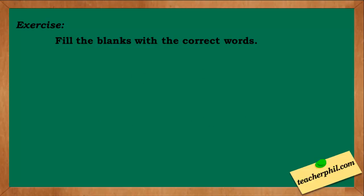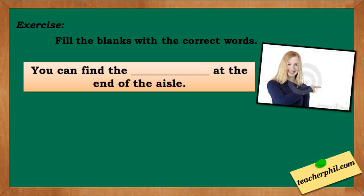For our exercise, fill the blanks with the correct words. The first one: you can find the blank at the end of the aisle. The correct answer is stationery with an E, which means writing and office supplies. You can find the stationery at the end of the aisle.